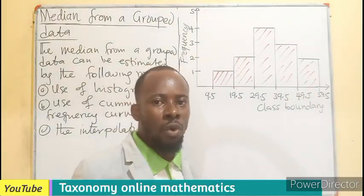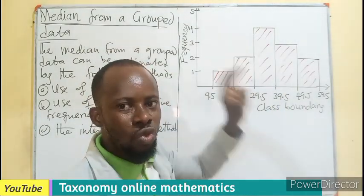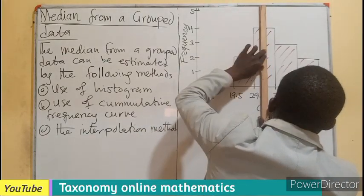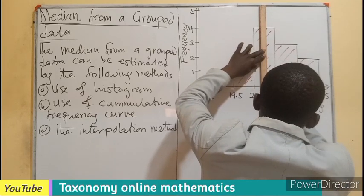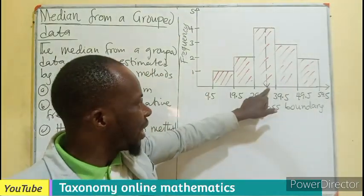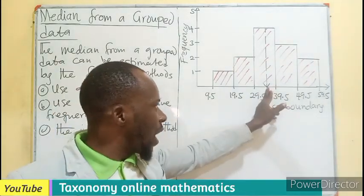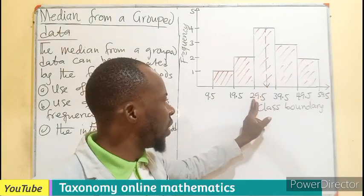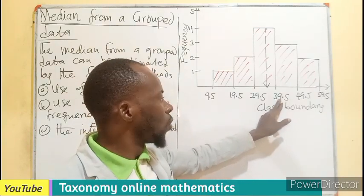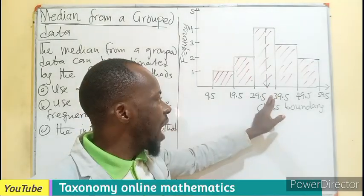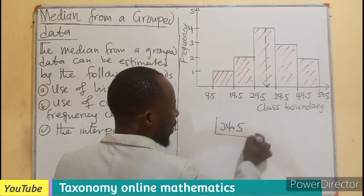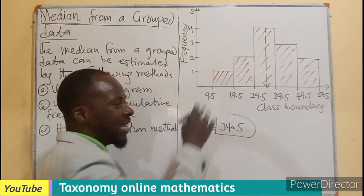If you use your ruler and divide this particular rectangle into two equal parts, I'm going to place my ruler in the middle exactly and draw a line. When I draw the line, the number that is going to be at the middle part where the line or the arrow is pointing, this is from 29.5 to 39.5, making the interval to be 10 or the class size to be 10. In the middle of this, it's going to be 5. So 5 plus 29.5, that would be 34.5.